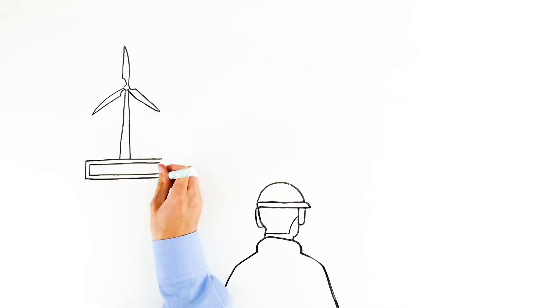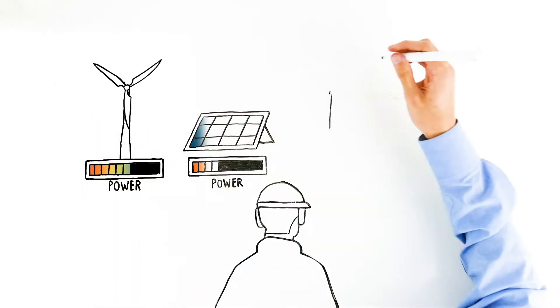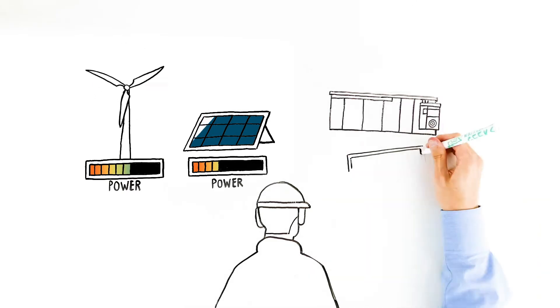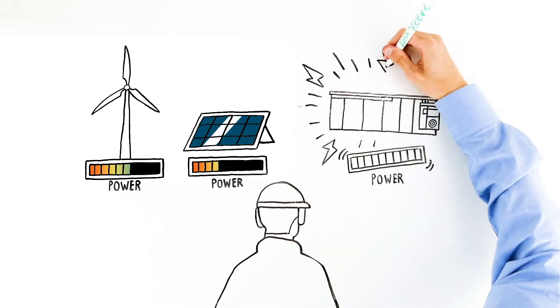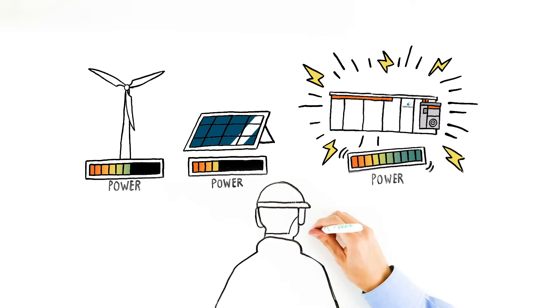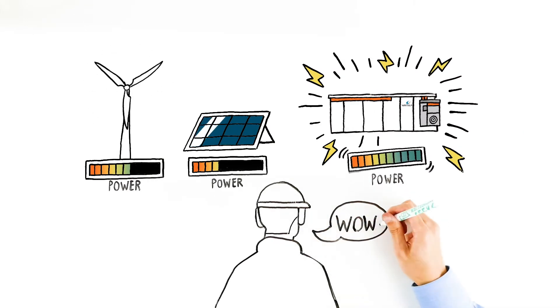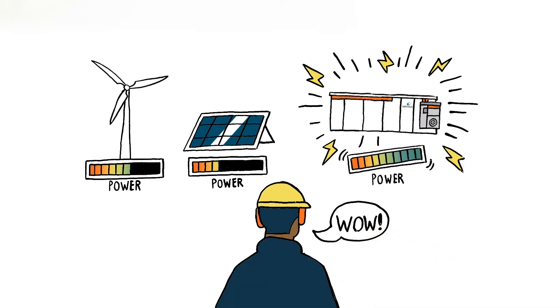When the wind is low and the turbines aren't producing enough power, GEMS automatically balances the output with secondary resources, like battery power, to make up the difference. GEMS software reacts in milliseconds, matching asset output to demand faster than Mark ever could, even with his years of experience.